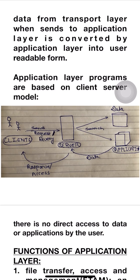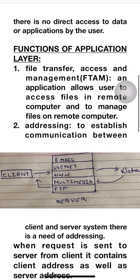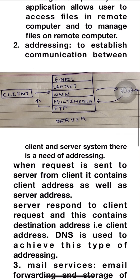Now we will study the functions of the application layer. The first function is File Transfer, Access and Management — that is, FTAM. To establish communication between the server and client system, there is a need for addressing.